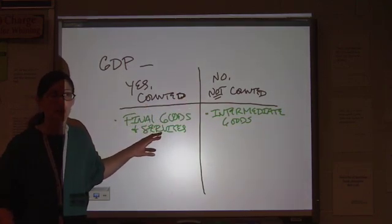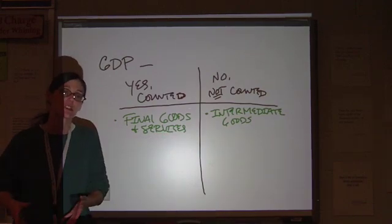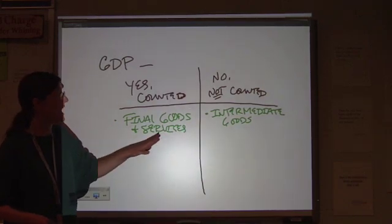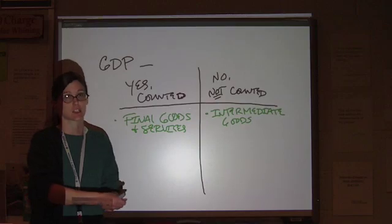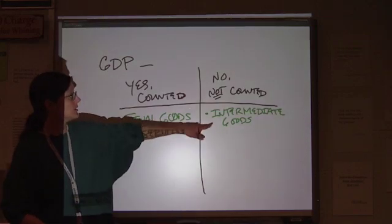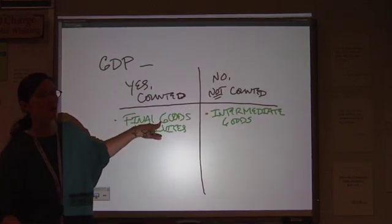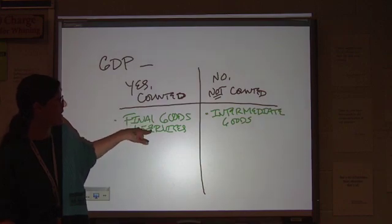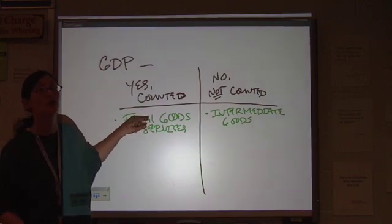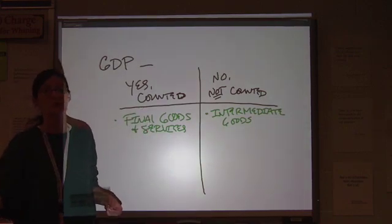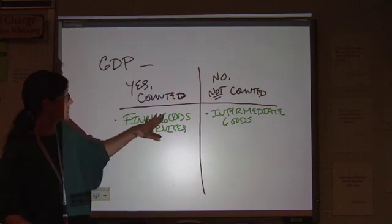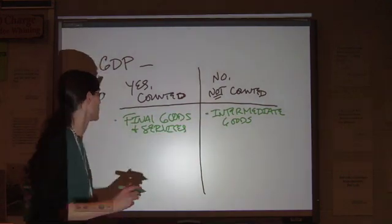We can't add up all of the labor and everything else that went into each stage. We have to look only at the value that is added at each stage. We don't want to double count it. We only want to count the value of the final good when it's actually sold to the person who's going to use it. So final goods, not intermediate goods.